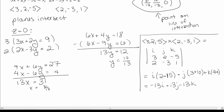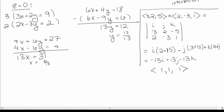Here's a vector in our direction, and we can simplify by dividing out −13, giving a direction vector of (1, 1, 1). Now we have a point and a direction vector, so we can find the equation of the line: (X, Y, Z) = (31/13, 12/13, 0) + t·(1, 1, 1). And that's the equation of our line.